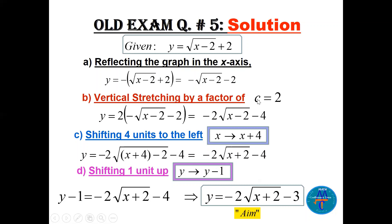Next, stretch vertically by multiplying by 2 to get −2√(x − 2) − 4. Then shift 4 units to the left, replacing x with x + 4, so (x + 4) − 2 = x + 2 — that matches our aim. Finally, we have −4 but need −3, so shift up one unit: replace y with y − 1, and −4 + 1 = −3, giving us the target −2√(x + 2) − 3.